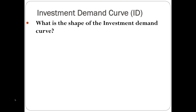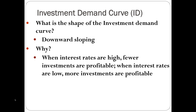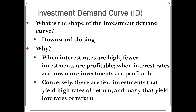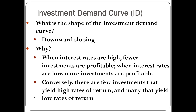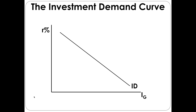Now I want to take a look at the investment demand curve. The investment demand curve is downward sloping. When interest rates are high, fewer investments are profitable. When interest rates are low, more investment is profitable so firms invest more. Conversely, there are few investments that yield high rates of return when interest rates are high, but many that yield low rates of return. On the graph, the y-axis has the real interest rate, the x-axis has gross private investment, and the downward sloping curve is called the investment demand curve, or ID.